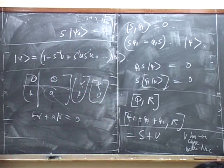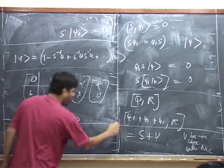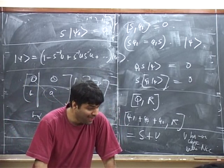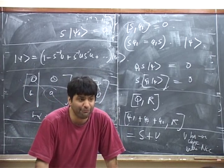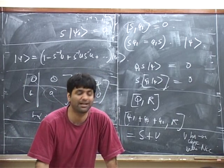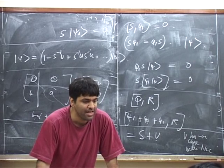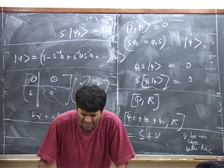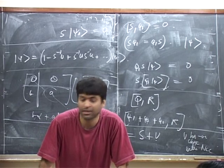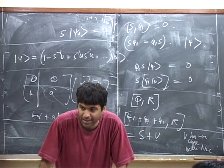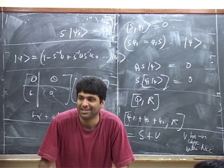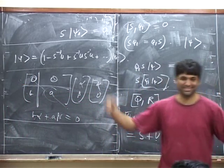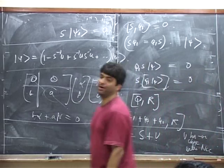This is the isomorphism between the kernels. So what have we concluded? We have concluded two things. Firstly, the Q-cohomology is equal to the kernel of S plus U. Secondly, the kernel of S plus U is isomorphic to the kernel of S, which equals the physical state space from light-cone quantization. There is one more thing we have to worry about: inner products.